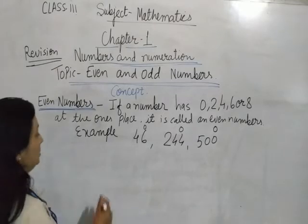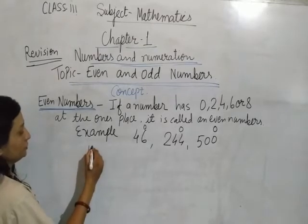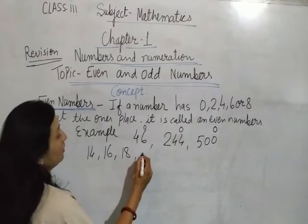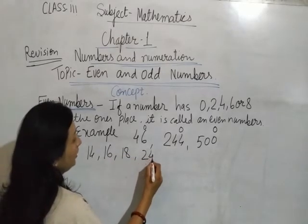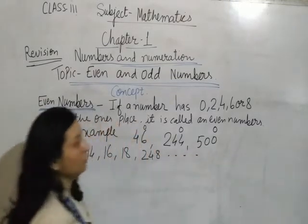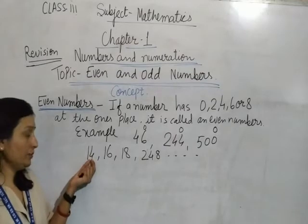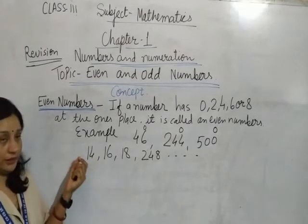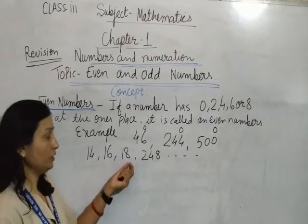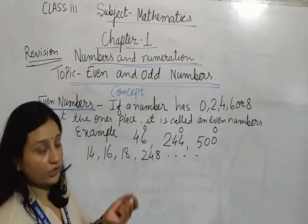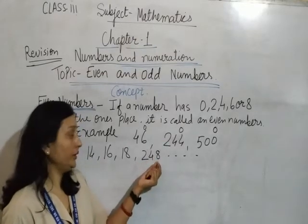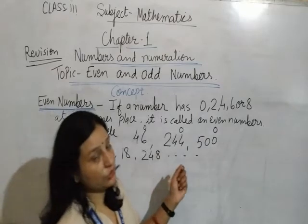More examples: 40, 60, 80, 2, 40, 8, and so on. Ones place value 4 means even number. Ones place value 6 means even number. Ones place value is 8 means even number. For a 3-digit number, take 248 — ones place value is 8, so it is an even number.